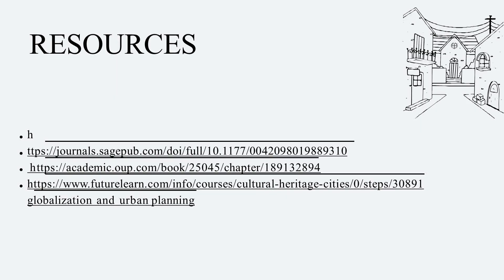These are the resources available to explore the magnitude of urbanization and globalization. These include journals from SAGE, academic journals from Oxford University Press, and the website Future Learn, which provides additional information regarding globalization and urban planning.